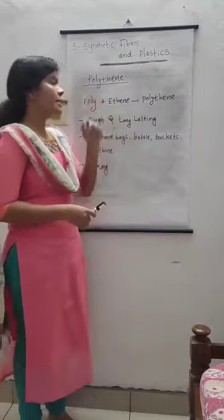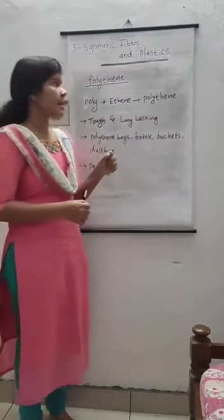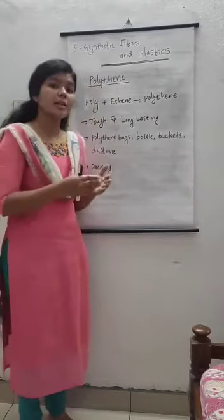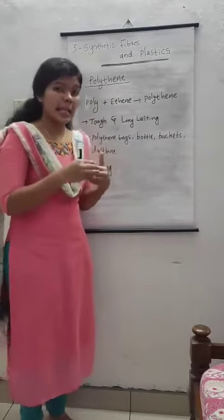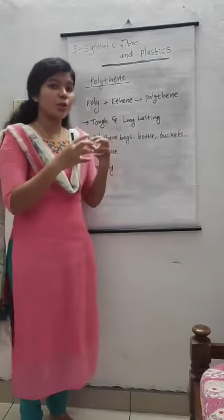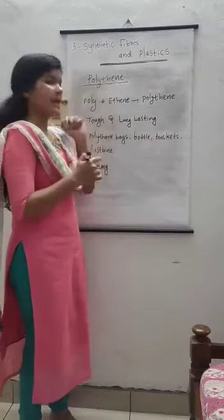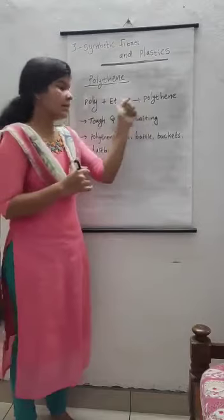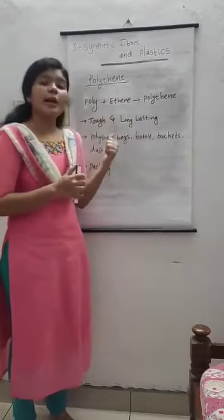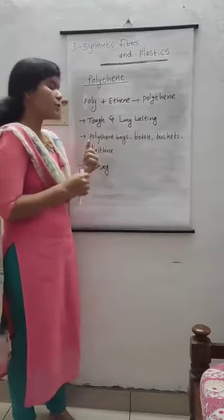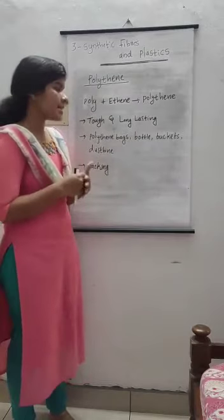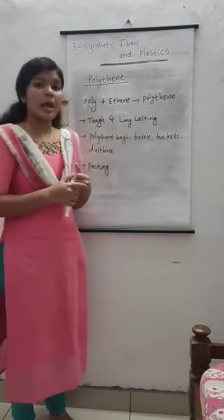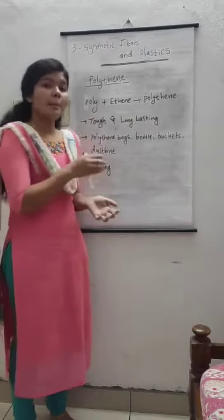The first one is polythene. As the name suggests, it is made from ethene molecules. The monomer is ethene, and these monomers are joined together to form polythene — that is poly plus ethene gives polythene. It is tough and long lasting, and it is used for making polythene bags, plastic bags, bottles, buckets, and dustbins, and it is also used for packing.